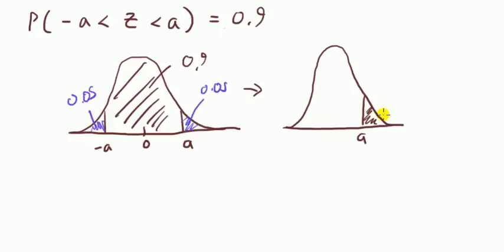So to find the value of a in the original question is the same as saying that we're after this a, where Z is bigger than a is equal to 0.05. I can now use the table because I've re-expressed the problem so that we've got of the form Z is bigger than something, because that's what the table gives me.